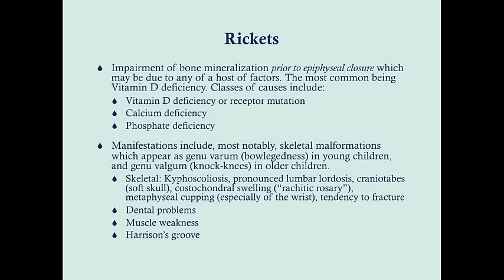Rickets is an impairment of bone mineralization prior to epiphyseal closure, so this only happens in childhood. Once the growth plates are closed, rickets won't develop. However, if you have a deficiency of any of those nutrients, you can develop osteomalacia as an adult. The most common cause is vitamin D deficiency, since it doesn't occur naturally in many foods, requiring fortification or oral supplementation — making rickets more common in the developing world.